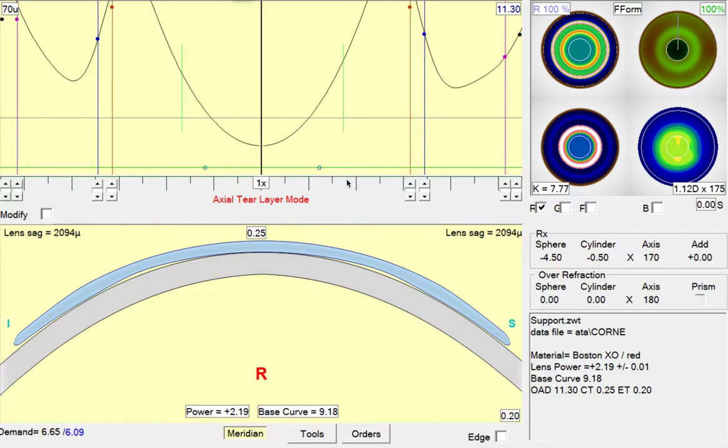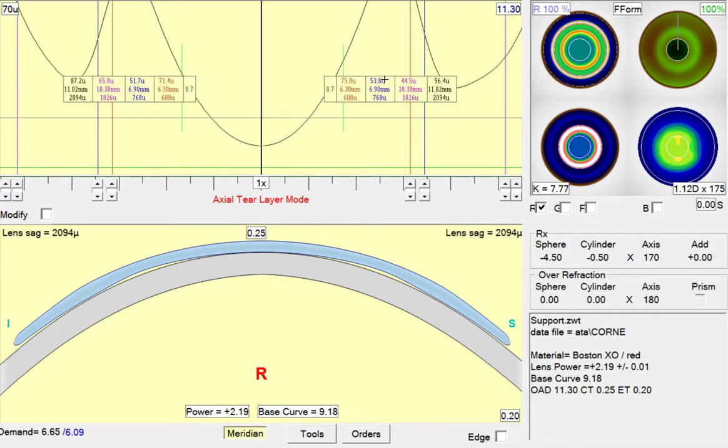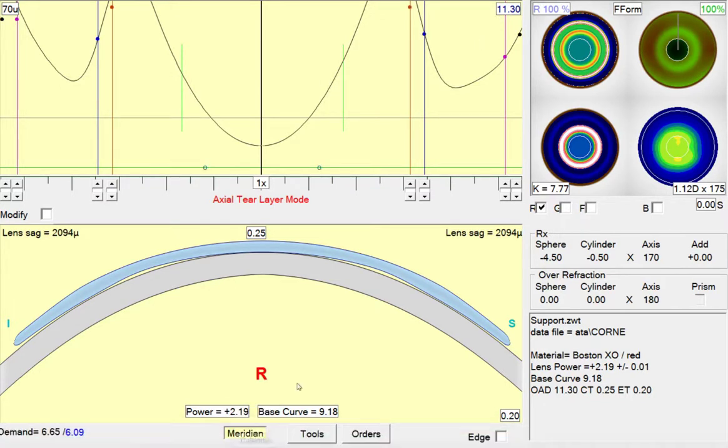So the first thing we'll do is switch this lens to G-SIM and we'll do that through the tools menu, configuration settings. So I'm going to see what the parameters are currently, 6369 and 113 diameter.